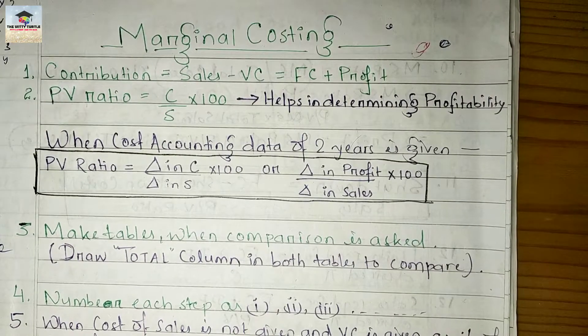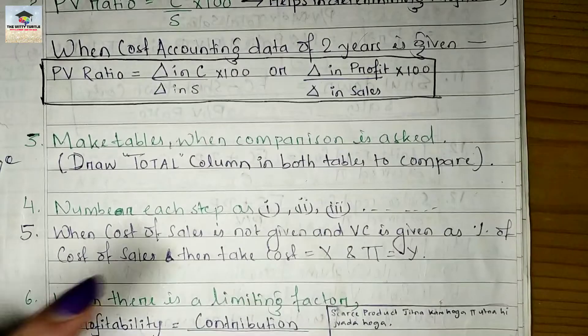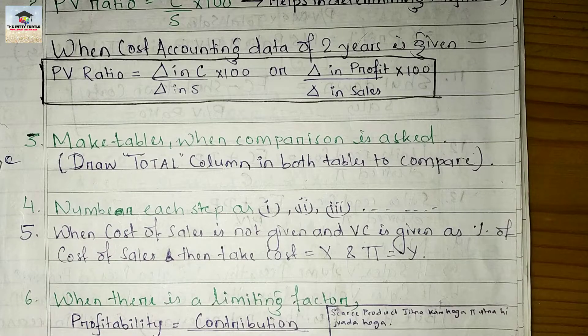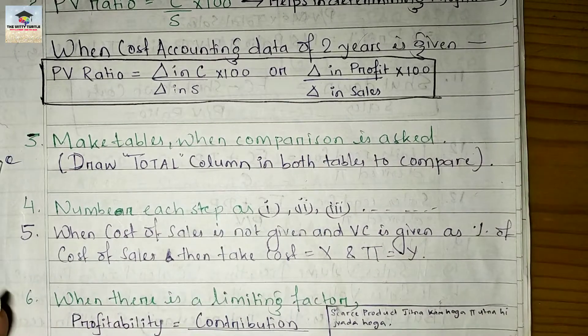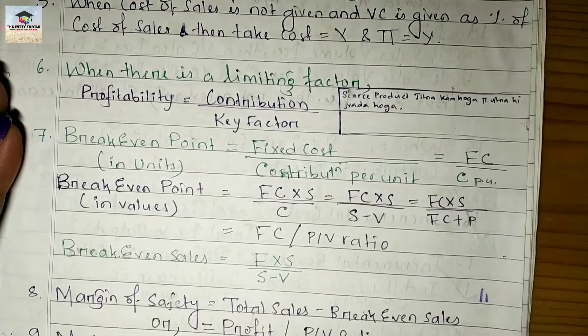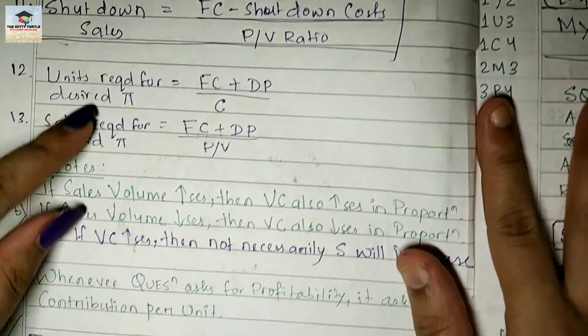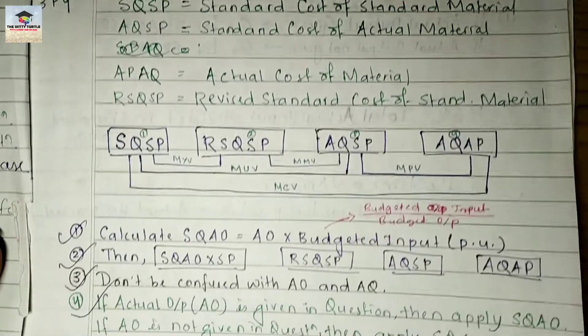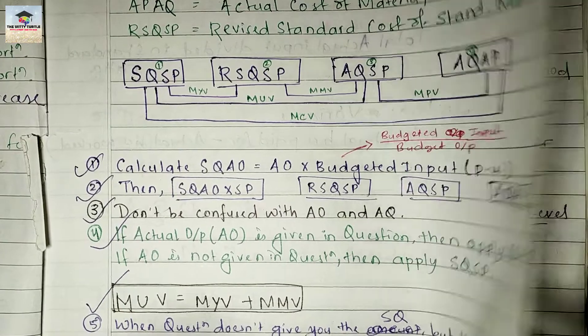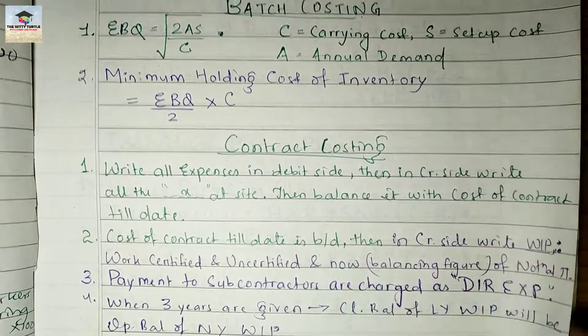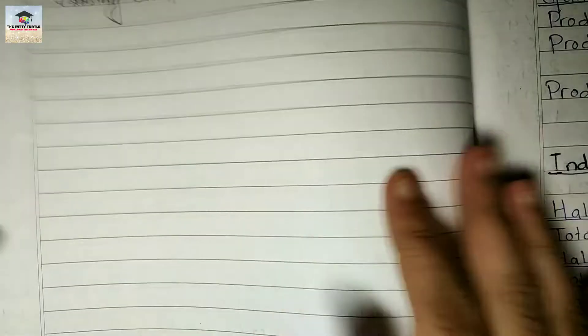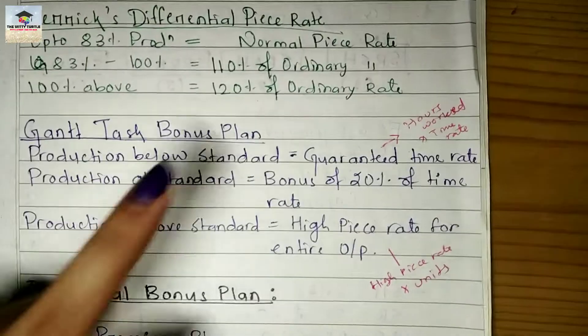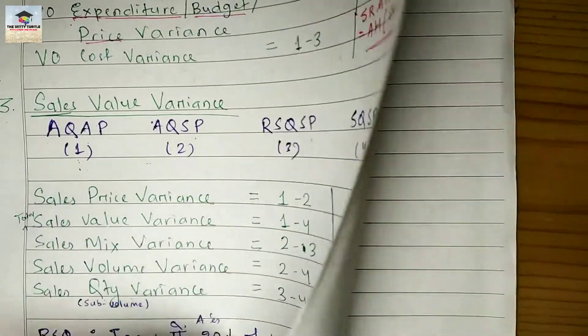For those wondering how to make a formula chart — this is what my formula chart looked like when I was at Inter level. This one is for Marginal Costing. Write down everything important that you feel you must remember before the exam. This way you can make a formula chart that you can revise repeatedly. Here is another one for Standard Costing. I made charts like this for every chapter, and also one for Employee Cost.